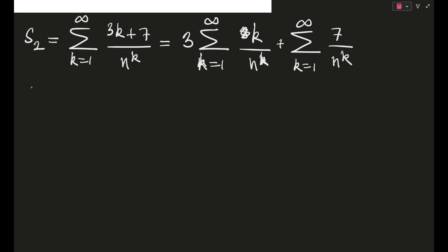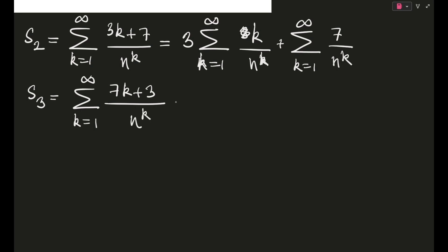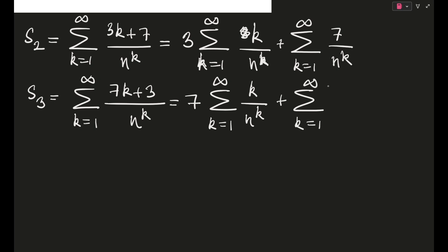Now let's write down S3 in a similar fashion. S3 was given as σ (k=1 to ∞) (7k + 3) / n^k. Breaking this apart, this becomes 7·σ(k=1 to ∞) k/n^k plus σ(k=1 to ∞) 3/n^k. That's the breakdown.